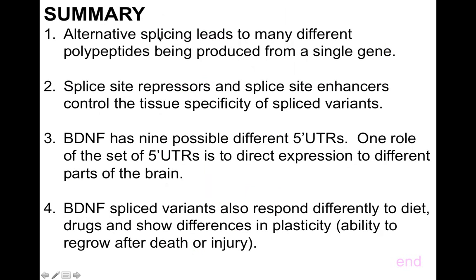The take-home lesson is that it's very important to consider splice variants when giving patients drugs or medications. In summary: alternative splicing leads to many different polypeptides being produced from a single gene. Splice site repressors and splice site enhancers control the tissue specificity of splice variants. Brain-derived neurotrophic factor has nine possible different 5' untranslated regions, one role of which is to direct expression to different parts of the brain. BDNF splice variants also respond differently to diet and drugs, and show differences in plasticity.